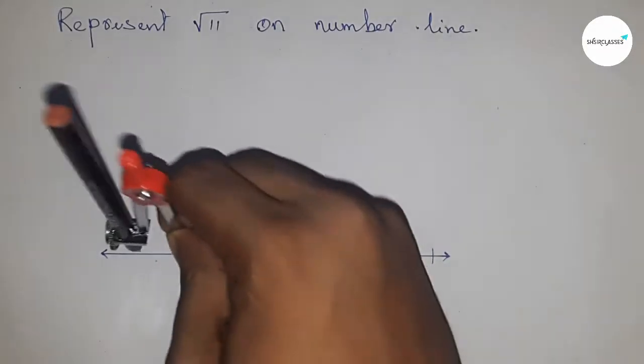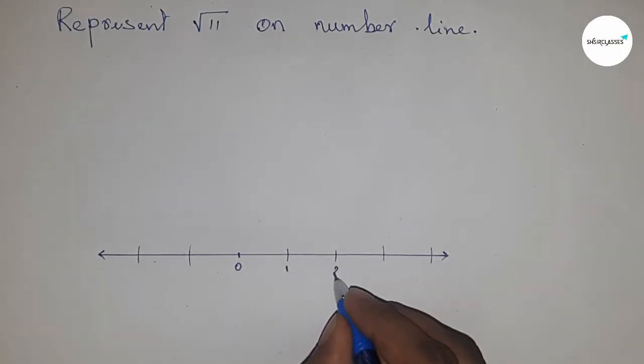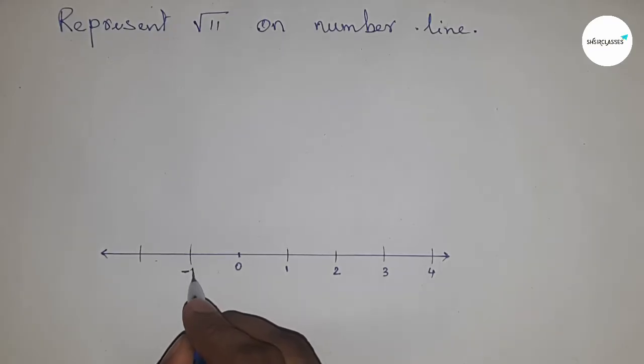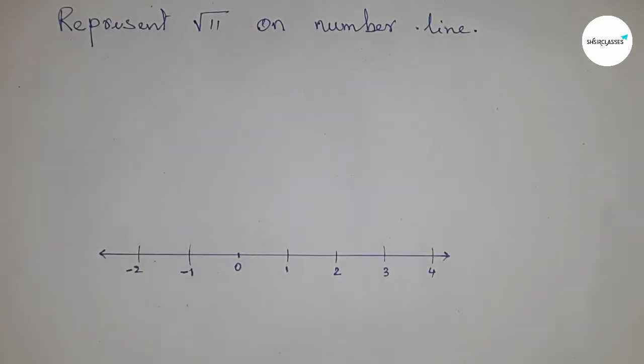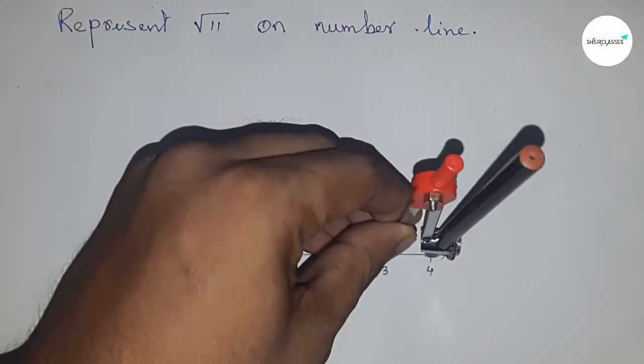Write down all the numbers: 1, 2, 3, 4, and on this side -1, -2. Next, we have to construct √10 first, then we can construct √11.